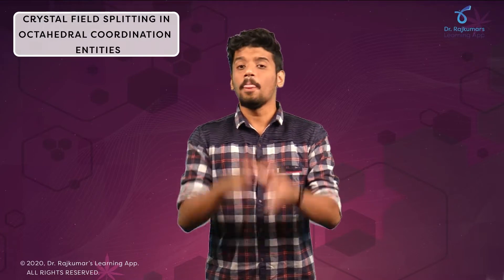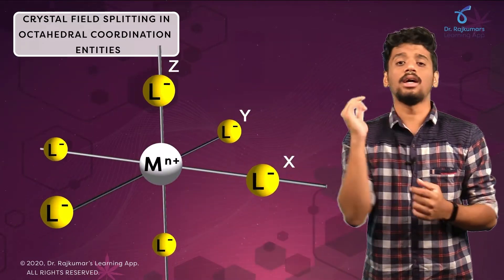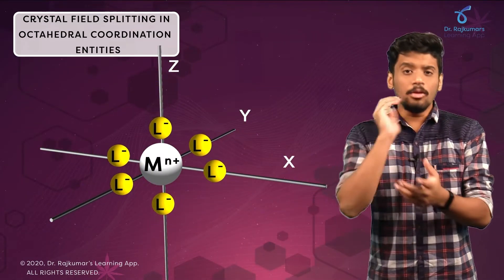Let us study the patterns of splitting in different crystal fields. First one is the crystal field splitting in octahedral coordination entities. In octahedral coordination entities, six ligands surround the metal ion.